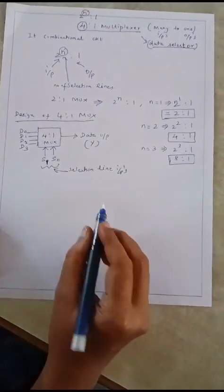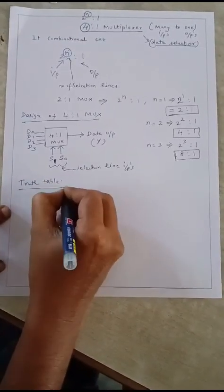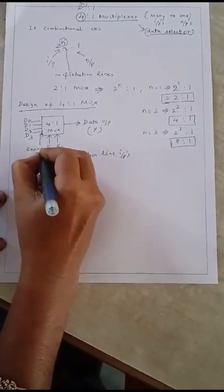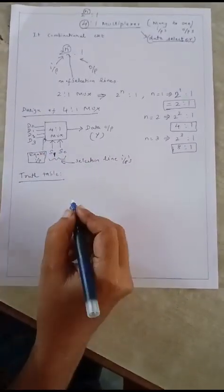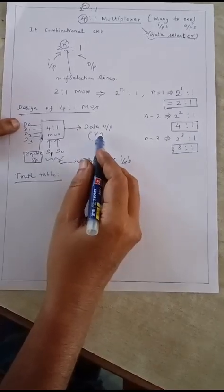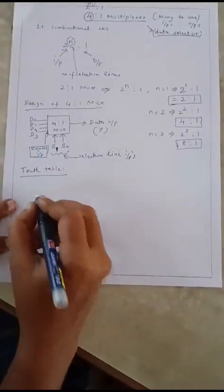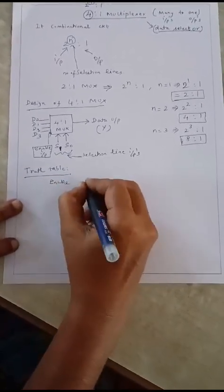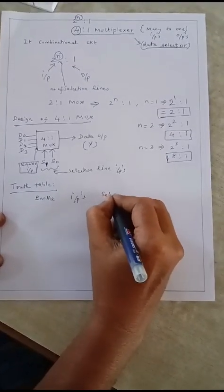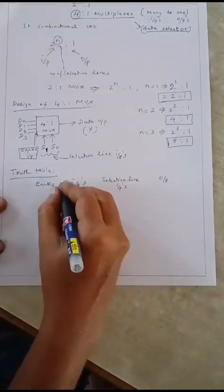This is the general block diagram of the 4-to-1 multiplexer, and for this we can construct a truth table. In the truth table for any multiplexer, there is one more input called the enable input. The truth table includes the enable input, the selection lines, the data inputs, and the output Y.